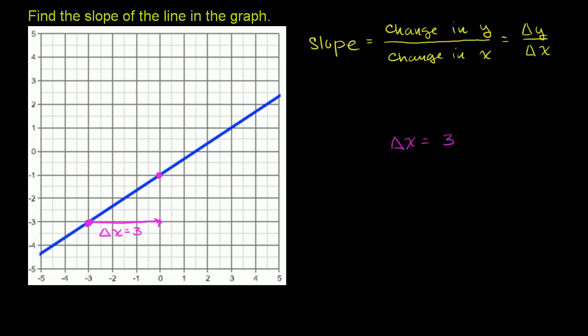And what's my change in y? Well my change in y, I'm going from negative 3 up to negative 1. Or you could just say 1, 2. So my change in y is equal to positive 2. So let me write that down. Change in y is equal to 2. So what is my change in y for a change in x? Well, when my change in x was 3, my change in y is 2. So this is my slope.